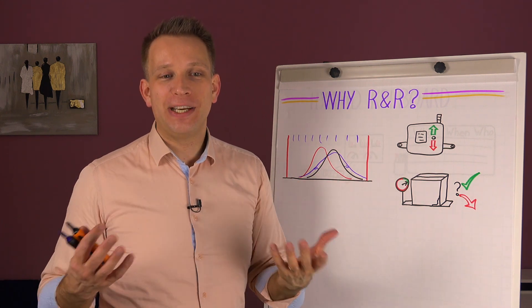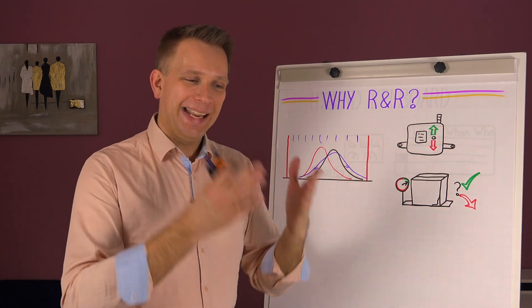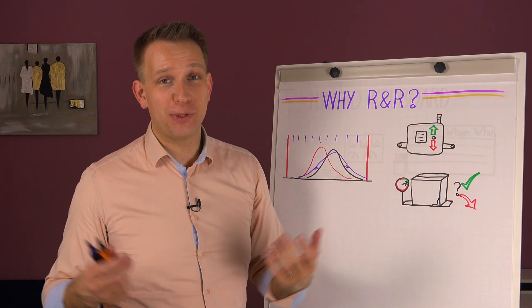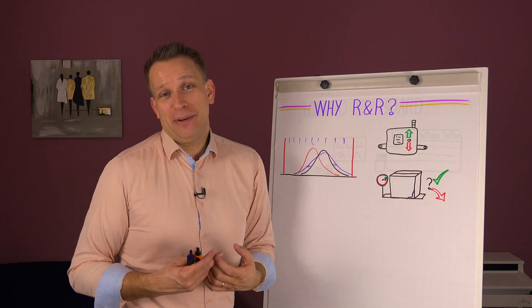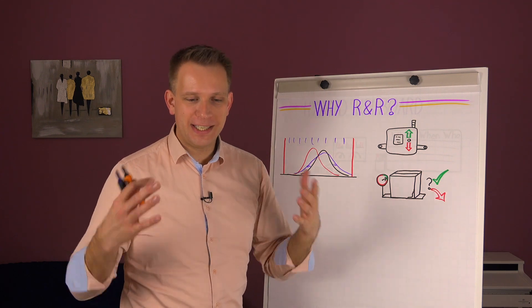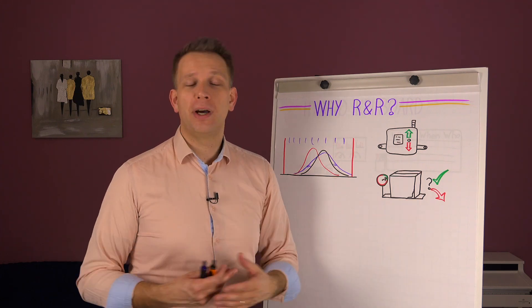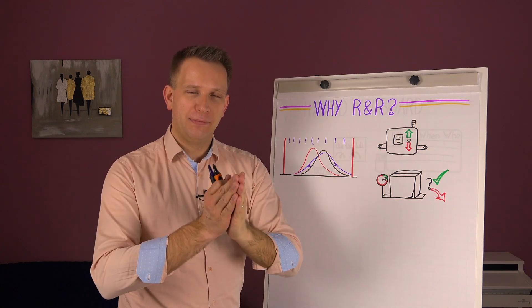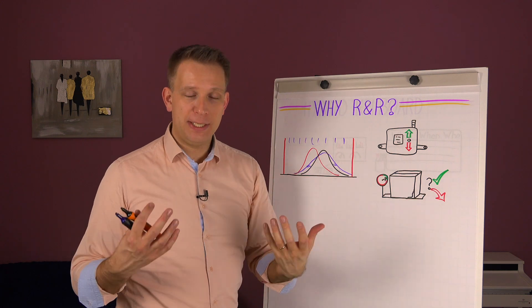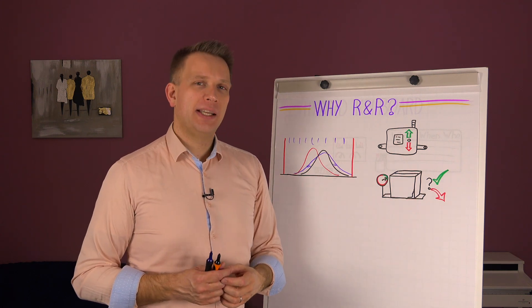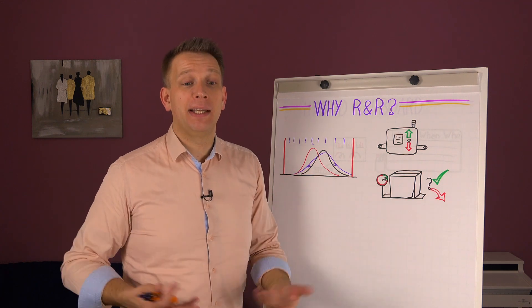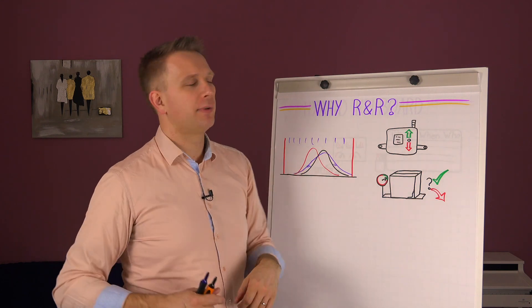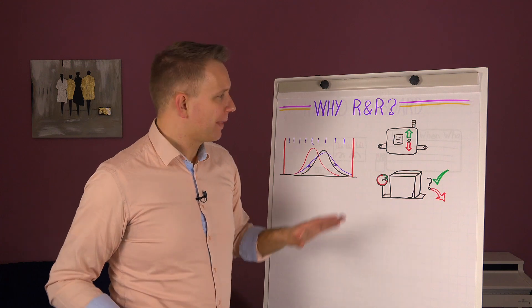And that brings us to sort of a strange catch-22. The thing is, in processes where we have a low CPK, quite often the measurement system is also not ideal. So you have a double whammy there. If you have a process that is difficult to steer and difficult to measure, you've got a serious challenge. And quite often processes that have a very small variation, and therefore a nice and high CPK, generally they also tend to have quite a good measurability. And that sort of automatically leads to a high R&R score, low in percentages, but a good R&R score. But you don't need it as much.